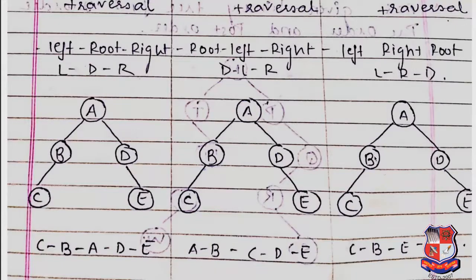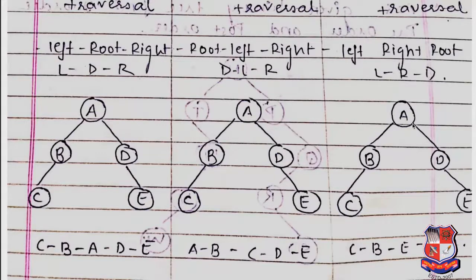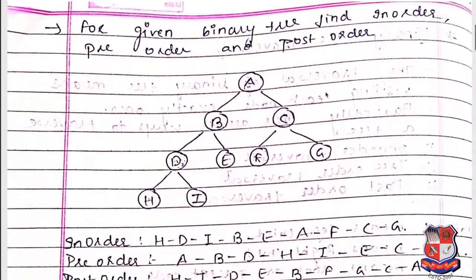After C, there is no right child of B, so we move to root B. Then we switch to the right subtree of A, which is D. We check left and right of D — no left child, so we consider E as the right node of D, then D as root of that subtree. Finally, A is the root of the whole tree and is visited last. Post-order: C, B, E, D, A.